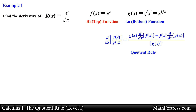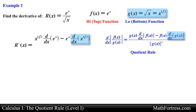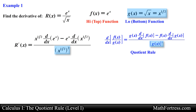The function in the denominator, or low function, will be g of x — in this case the radical function. Once you have identified f of x and g of x, it is just a matter of finding each function's derivative and substituting into the quotient rule formula. r prime of x is equal to x raised to the power of one half times the derivative of e to the x, minus e to the x times the derivative of x to the power of one half, all over x to the power of one half raised to the power of 2. Remember to rewrite radical expressions into fractional powers so you have a derivative-friendly form.